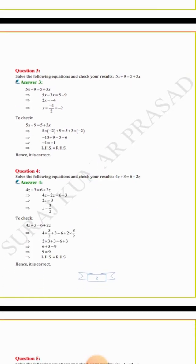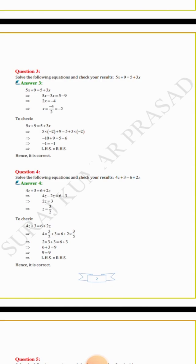Question number 3: solve 5x + 9 = 5 + 3x. We find the value of x. Then 5x minus 3x equals 5 minus 9, giving 2x equals minus 4, so x equals minus 4 by 2, and the value of x is minus 2.